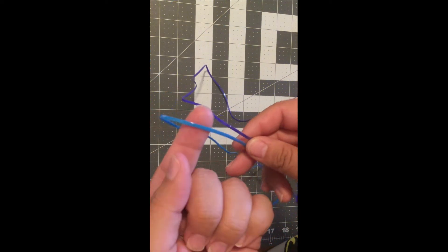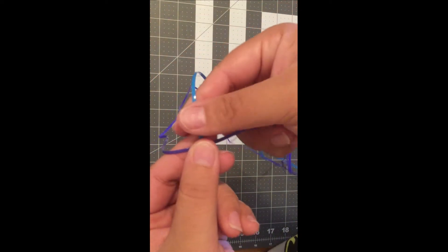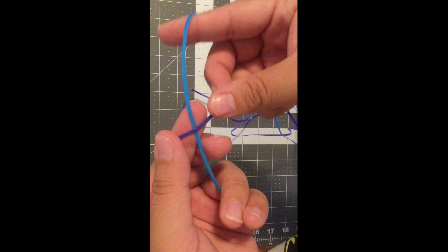After you find your centers you are going to overlap them and make an X on your finger. Make sure that your bottom color is going up and down and the color on the top is going side to side on your finger to make this process easier for you.